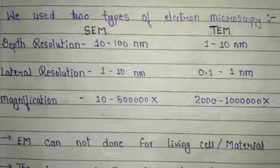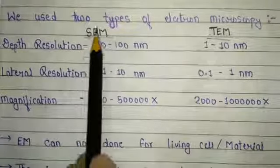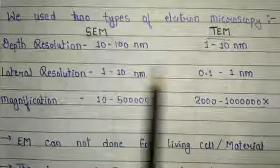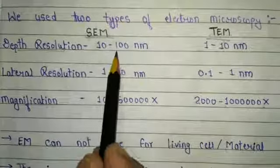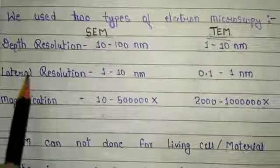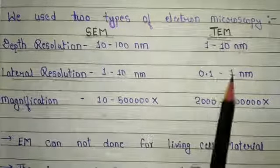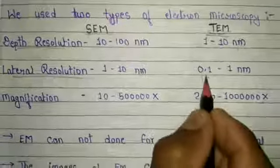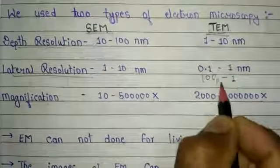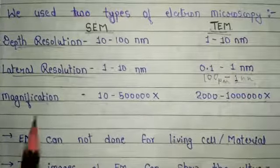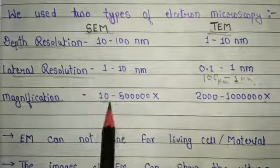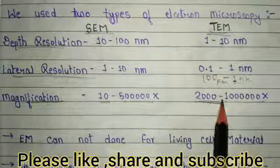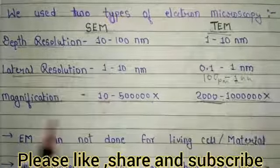We use two types of electron microscopy: SEM (scanning electron microscopy) and TEM (transmission electron microscopy). The depth resolution is higher in SEM at 10 to 100 nanometers, while TEM is 1 to 10 nanometers. Lateral resolution is 1 to 10 nanometers for SEM and 0.1 to 1 nanometer (100 picometers to 1 nanometer) for TEM. Magnification is up to 5 lakh x for SEM and 2000 to 1 million x for TEM.